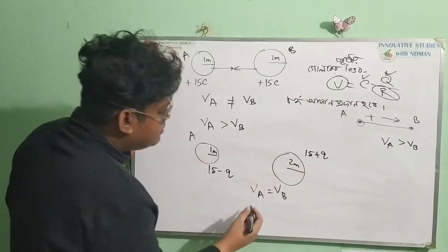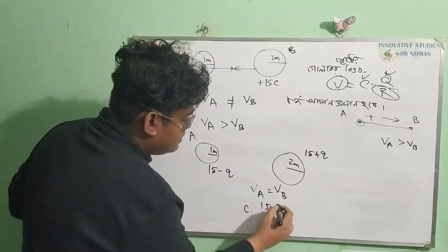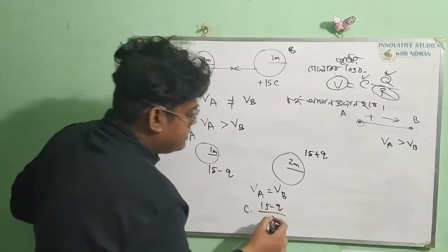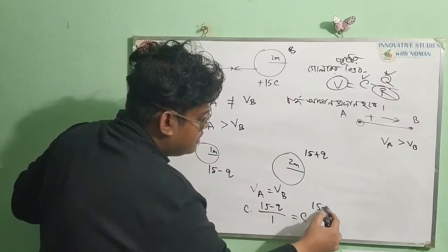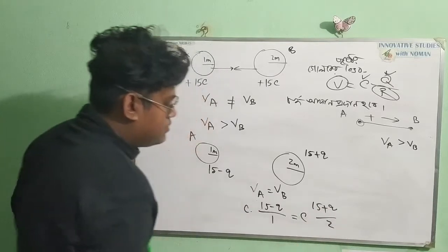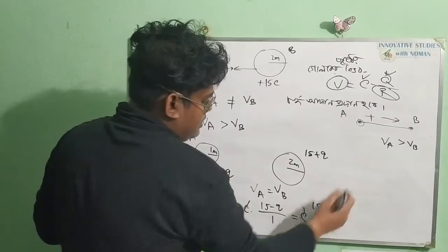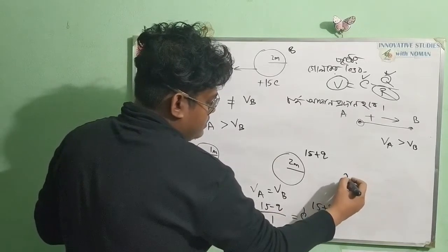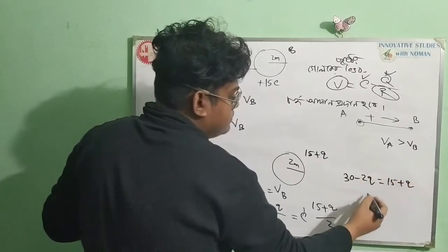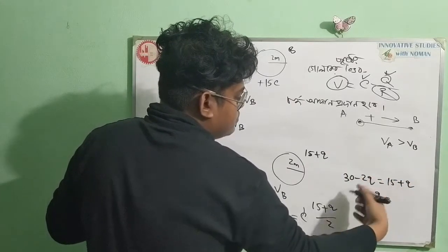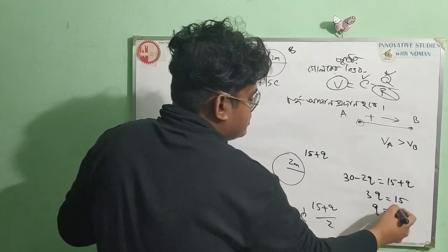As of this, let's take pictures. C: charge divided by Vashar. DLV over C into charge divided by Vashar — this is the cut. I will not go to Vashar. 30 minus 2Q equal to 15 plus Q. 3Q equal to 15. Q equal to 5.